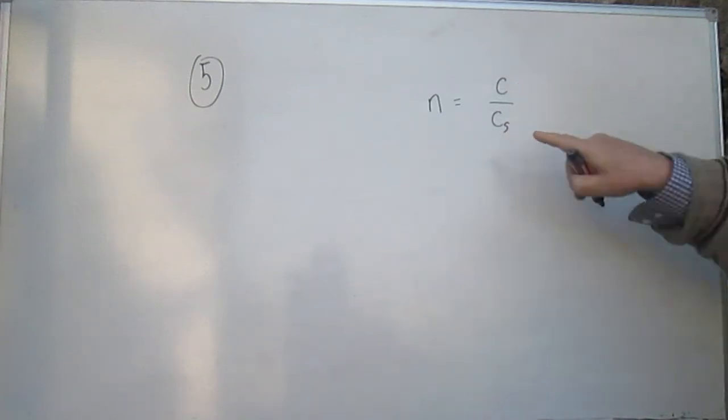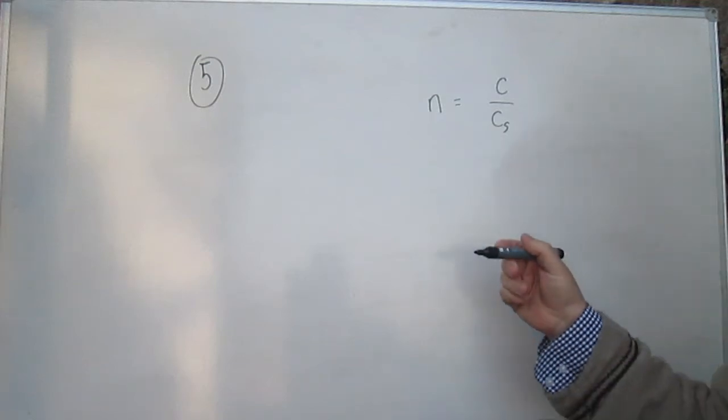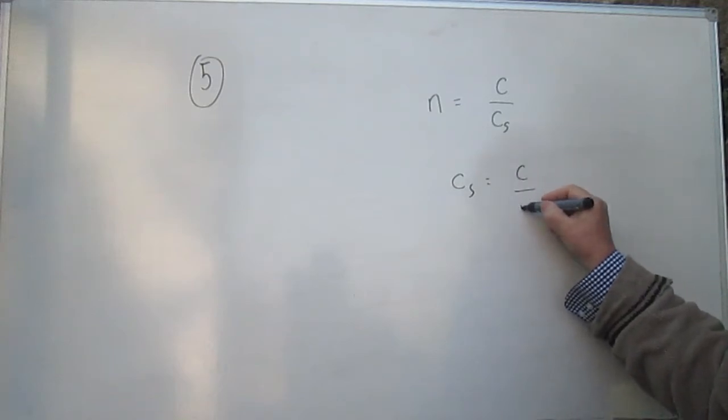And remember that what the optically dense medium does is slow down the light. So cs is smaller. If we rearrange that, we get cs is equal to c over n.